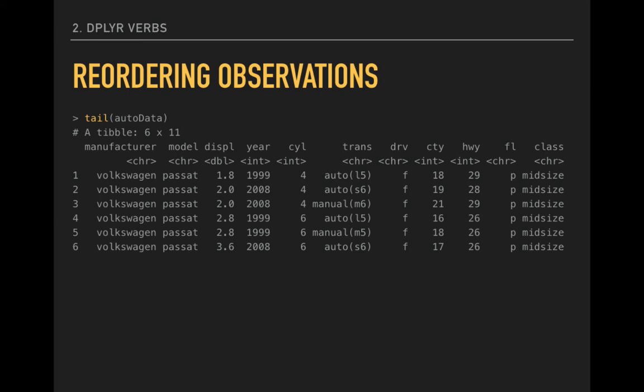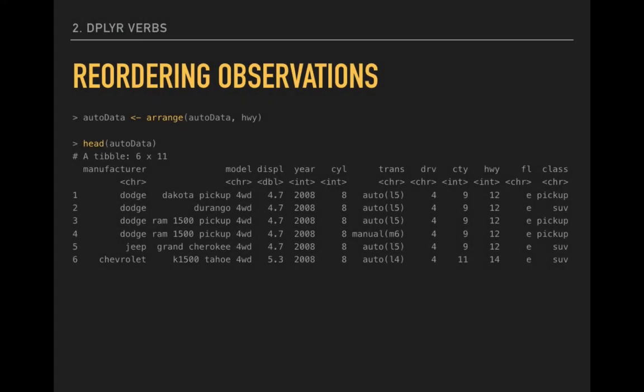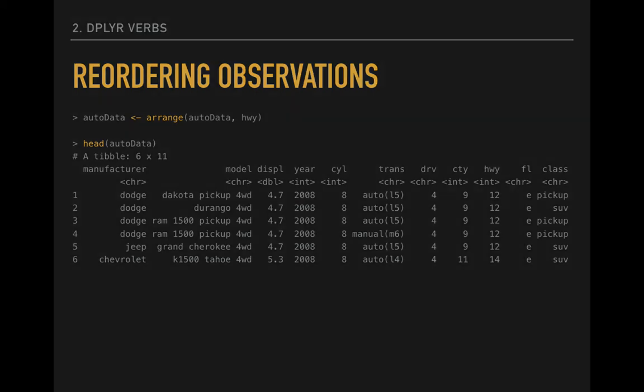We can also look at the last few observations using the tail function. Here again, we see indications of data that have been alphabetized, with the last six observations all being Volkswagen cars. Now we can change the order by arranging the data based on highway fuel efficiency. After assigning that change back onto the AutoData frame, we now see that the first few observations all have very low highway fuel efficiency, just 12 miles per gallon, for the Dodge and Jeep models.